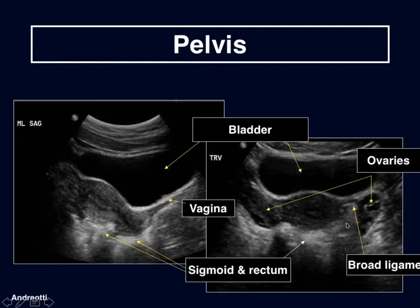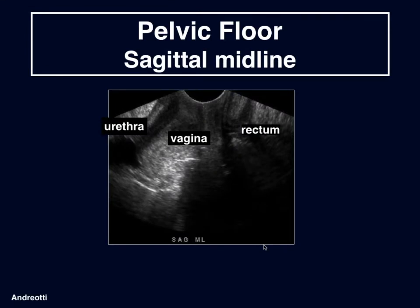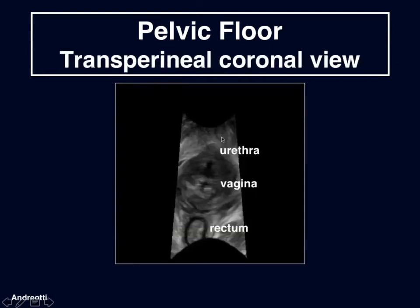We can see the ovaries on either side with little tiny follicles that helped us to know that these are truly the ovaries. We can also use ultrasound to look at the pelvic floor and see the normal anatomy — the relationship of the urethra, vagina, and rectum in the sagittal plane. And then here, we can even see the relationships in the coronal plane by doing a transperineal evaluation of the pelvic floor.